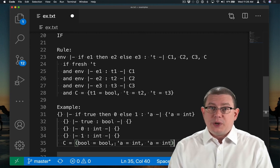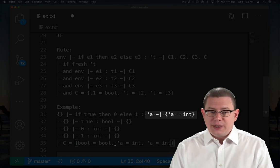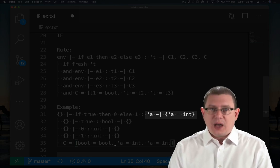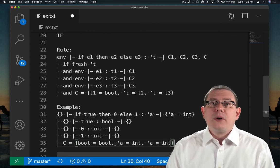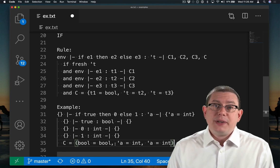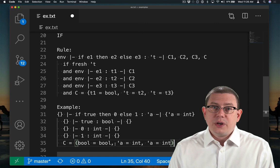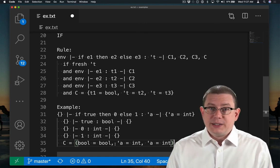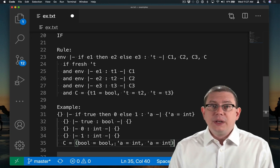So notice at the end of doing inference for this if expression, I have a type alpha for it and a constraint on that type. And you and I can look at that and say, oh yeah, so that means the type of the entire if expression is int. But remember, in implementing this as an algorithm, we're going to end up with potentially a large set of constraints that need to be solved. Maybe it's even too hard for our human brains to solve them because there's just so many. So we'll return to the notion of how to solve that set of constraints and combine it together with the inferred type alpha later on.